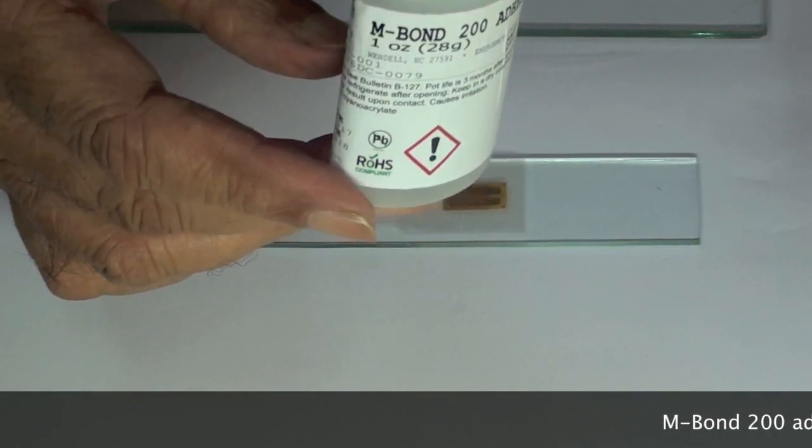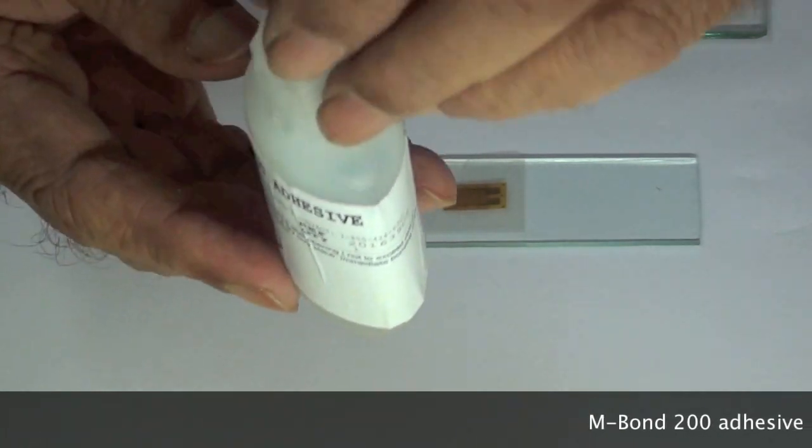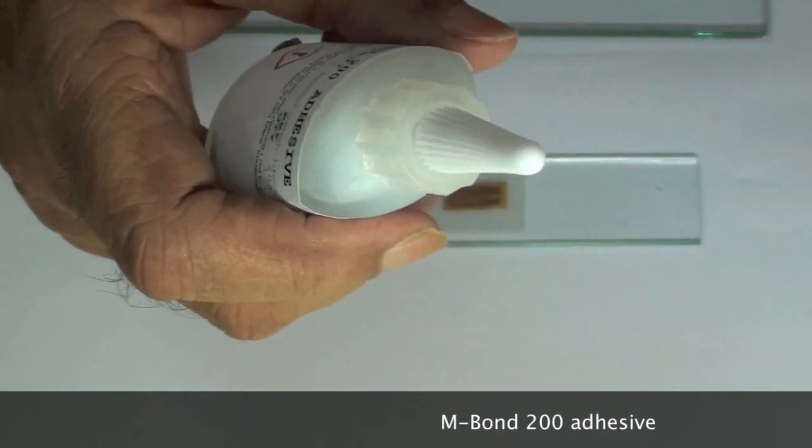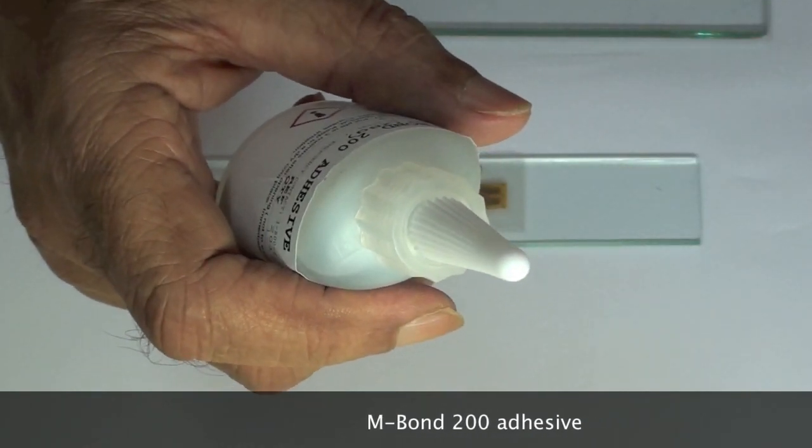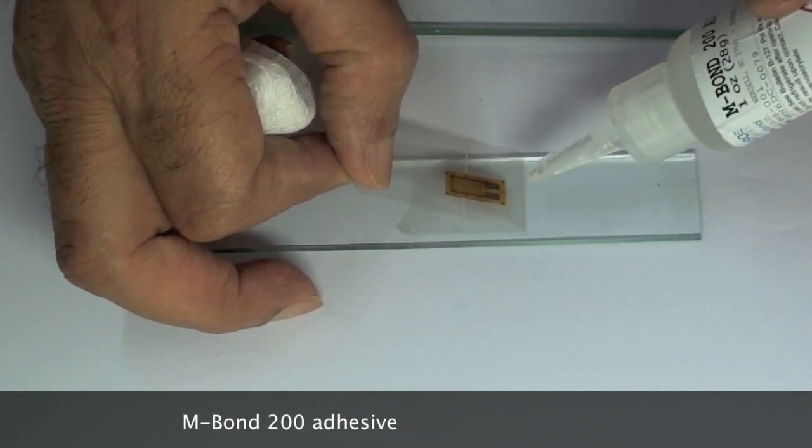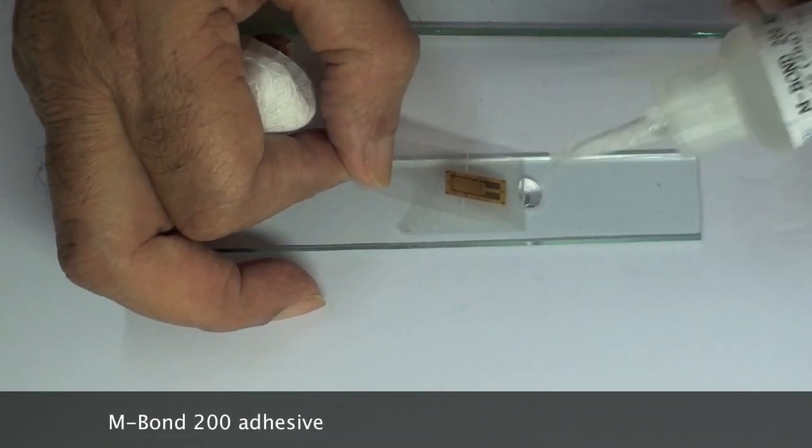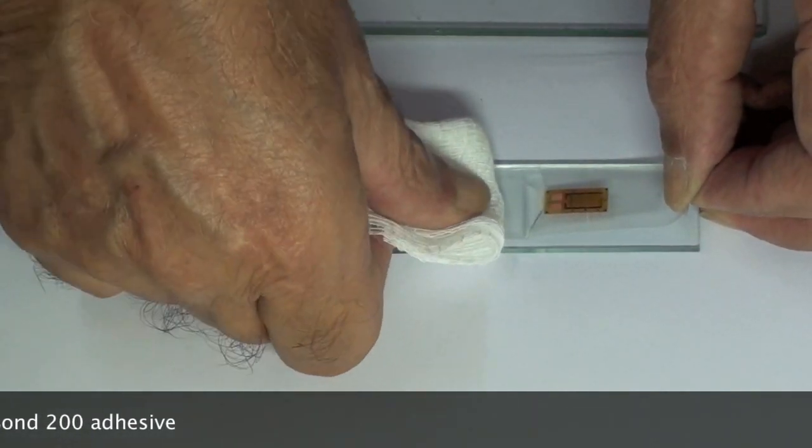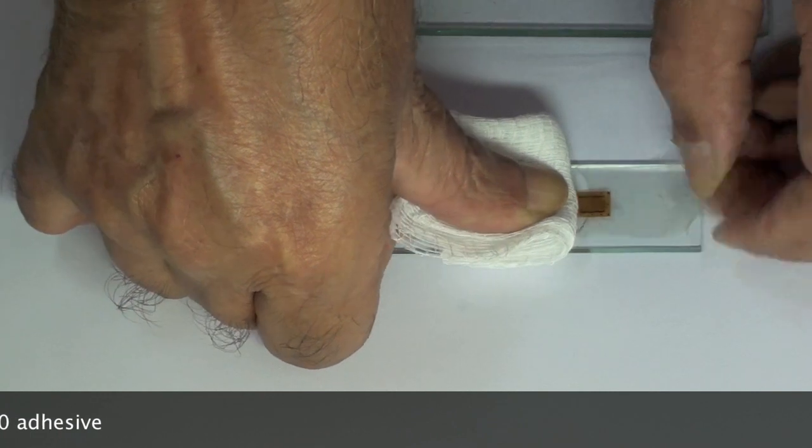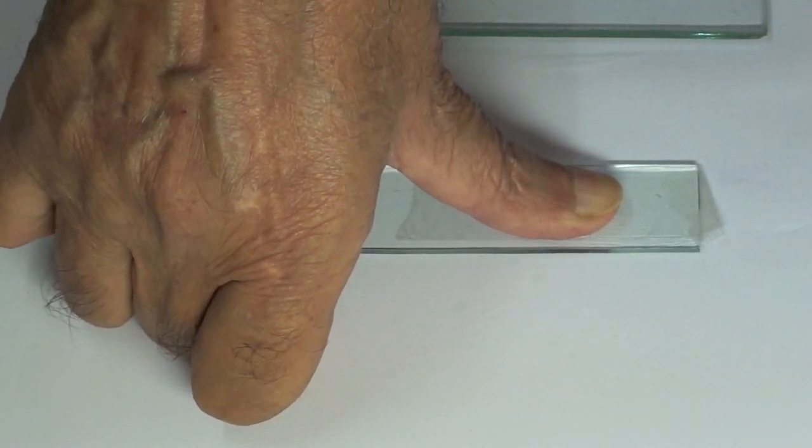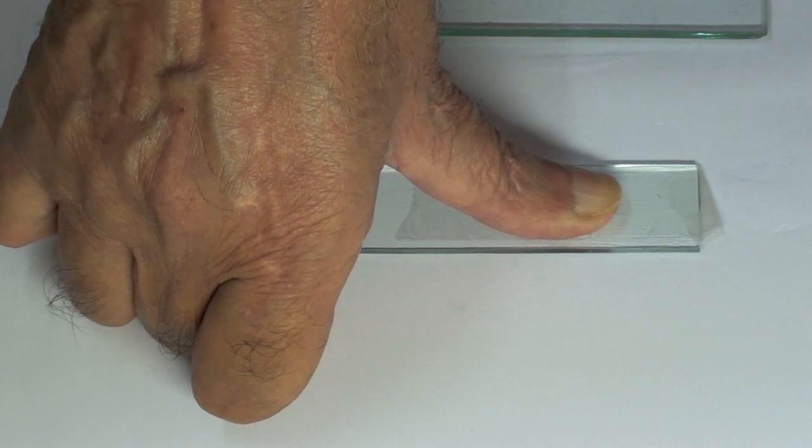When the tape holding the gauge is held at an obtuse angle to the surface of the part, a drop of M-Bond 200 adhesive is placed at the join of the tape and the part's surface. The tape is then held over the surface at a shallow angle and pressed down with a smooth sliding action using a folded gauze pad, pushing out all excess adhesive all the way to the end of the tape.